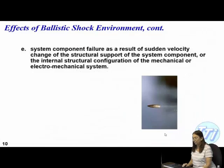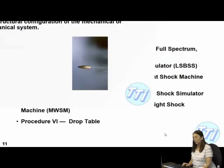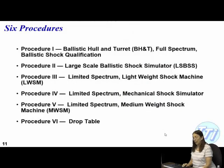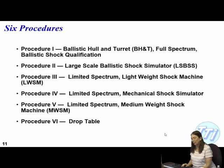You can have issues with crystals, ceramics, epoxy, glass envelopes — anything that could possibly chip away could be affected by a shock like that. You can also have system component failure as a result of sudden velocity change of the structural support of the system components. So there are six different ways — the procedures are just different ways of handling the test.